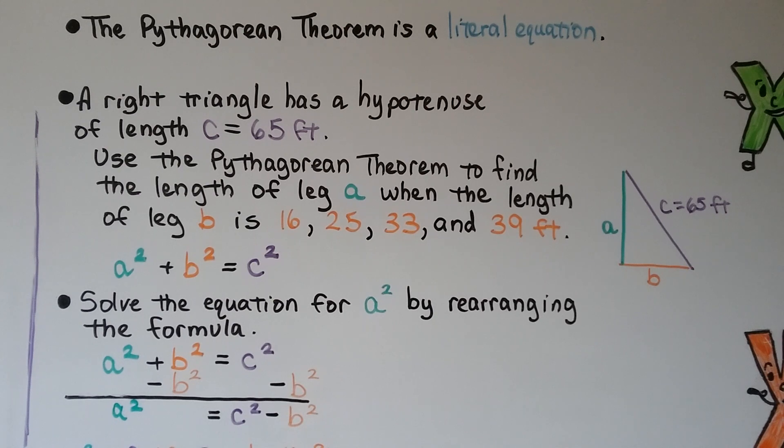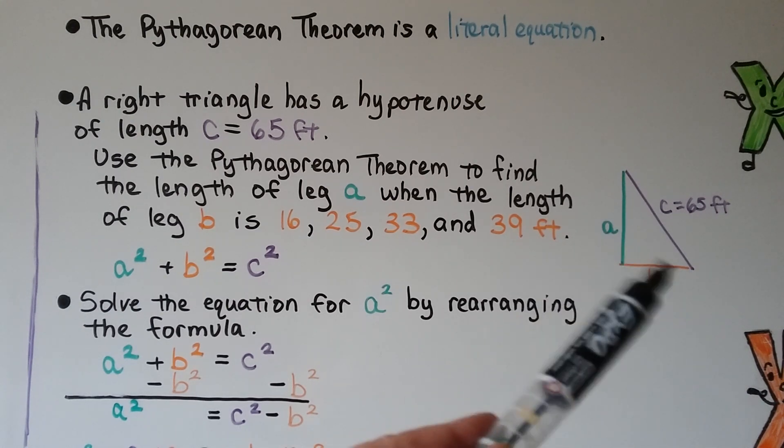The Pythagorean theorem is a literal equation. A right triangle has a hypotenuse of length c equals 65 feet, so we can even draw a little diagram to help us.